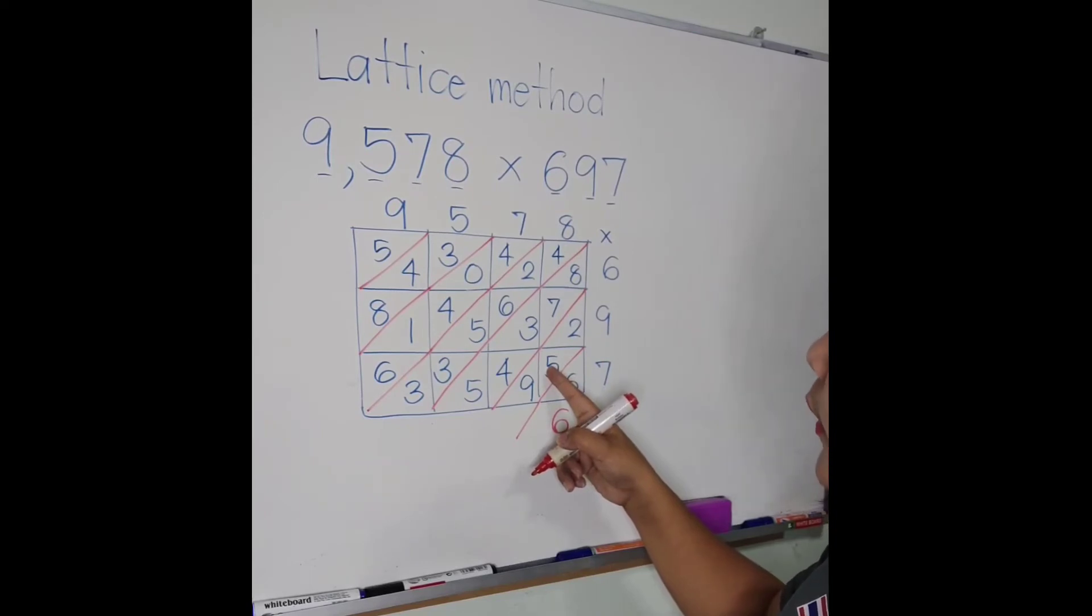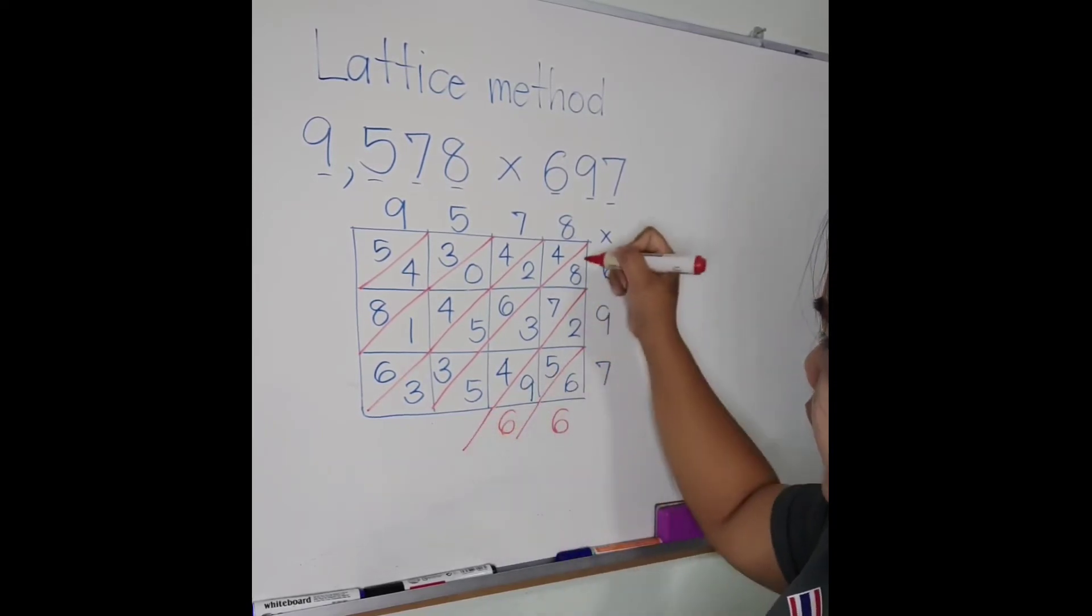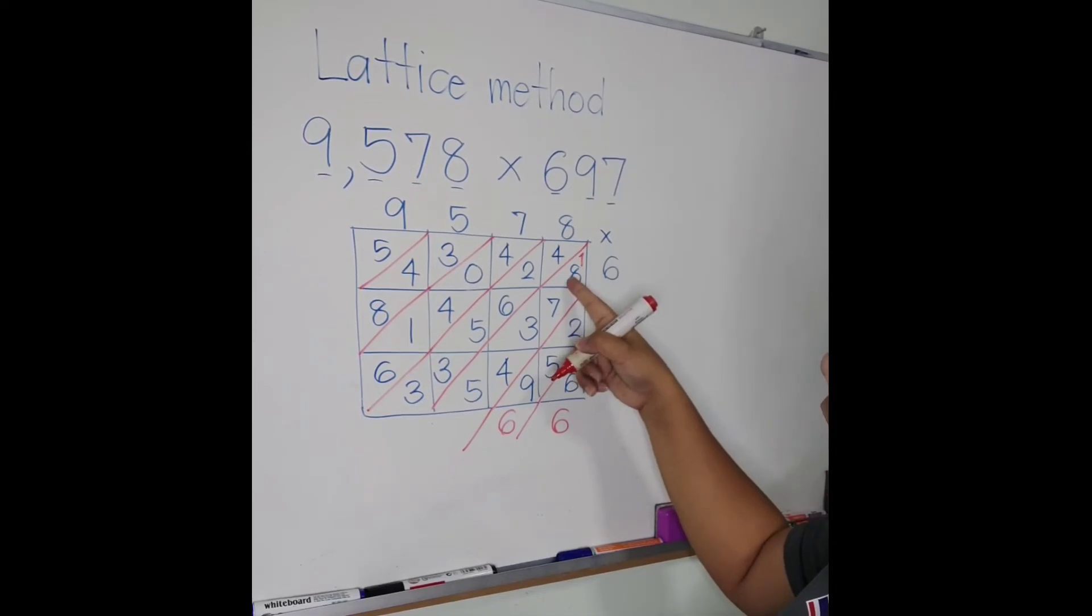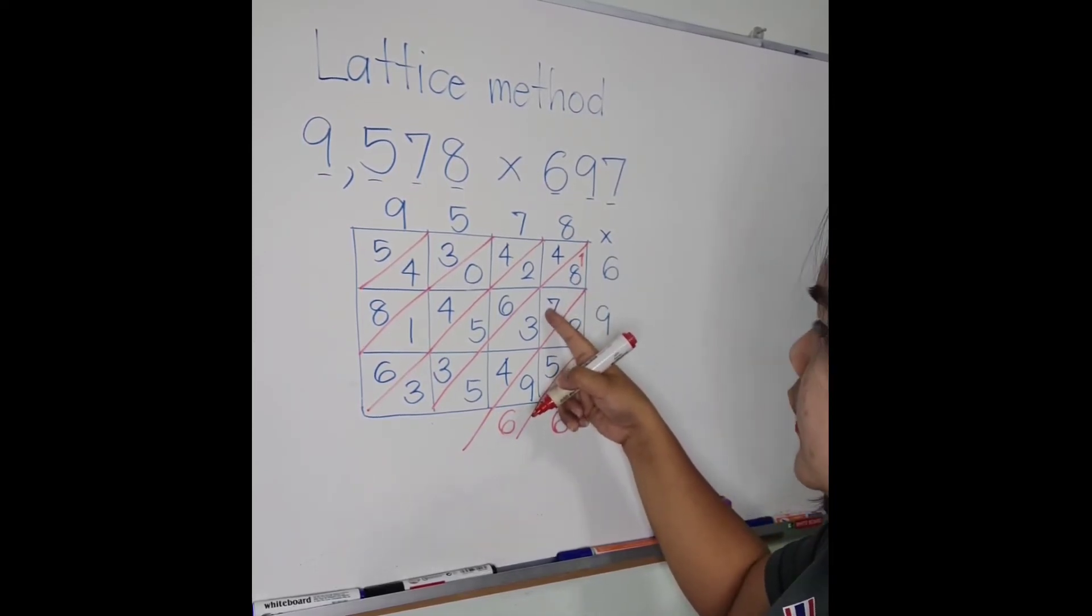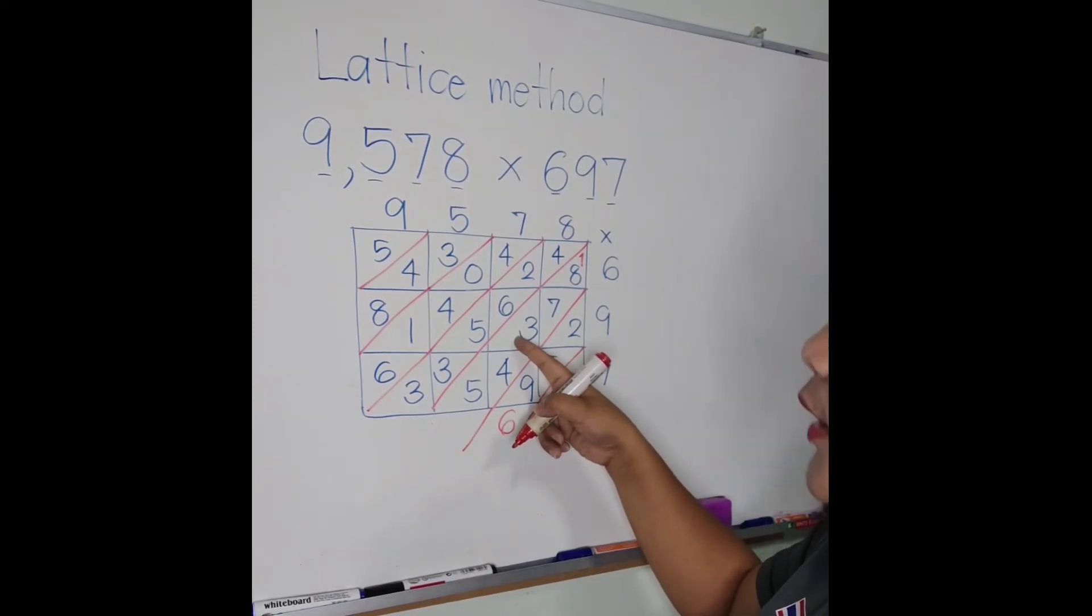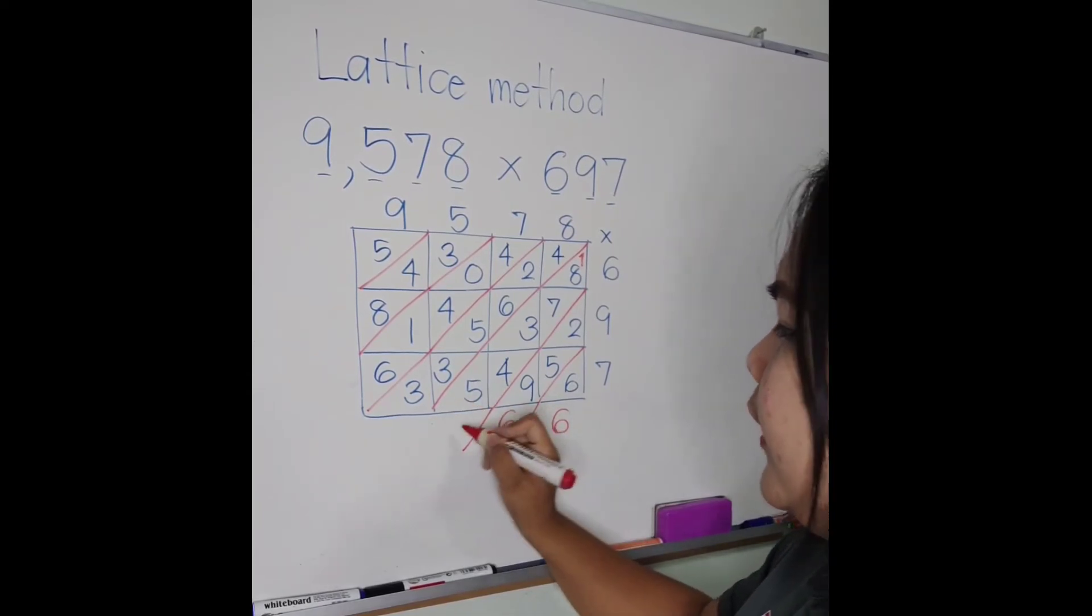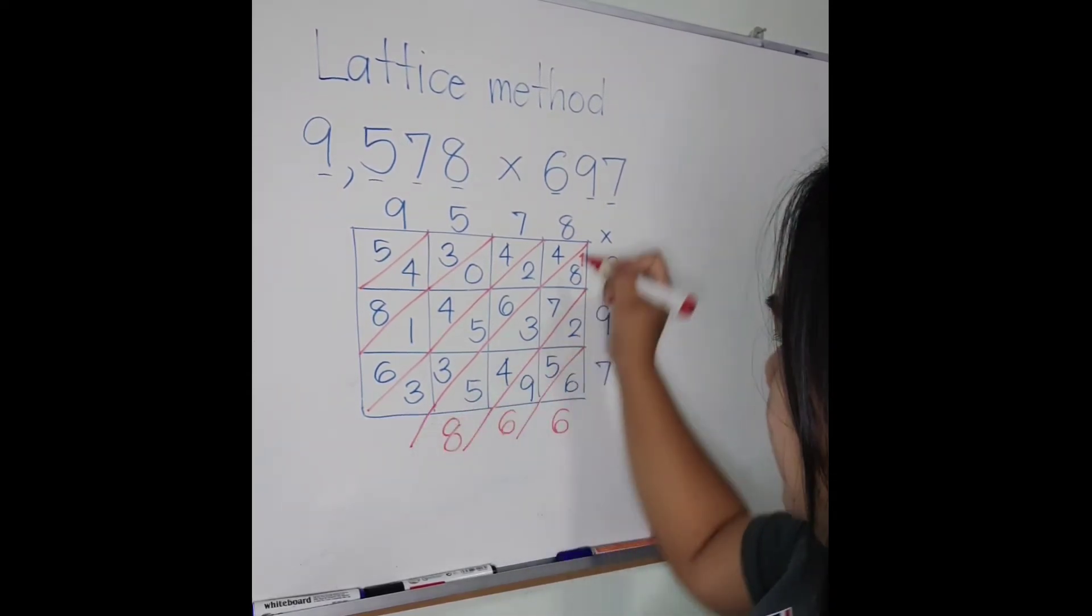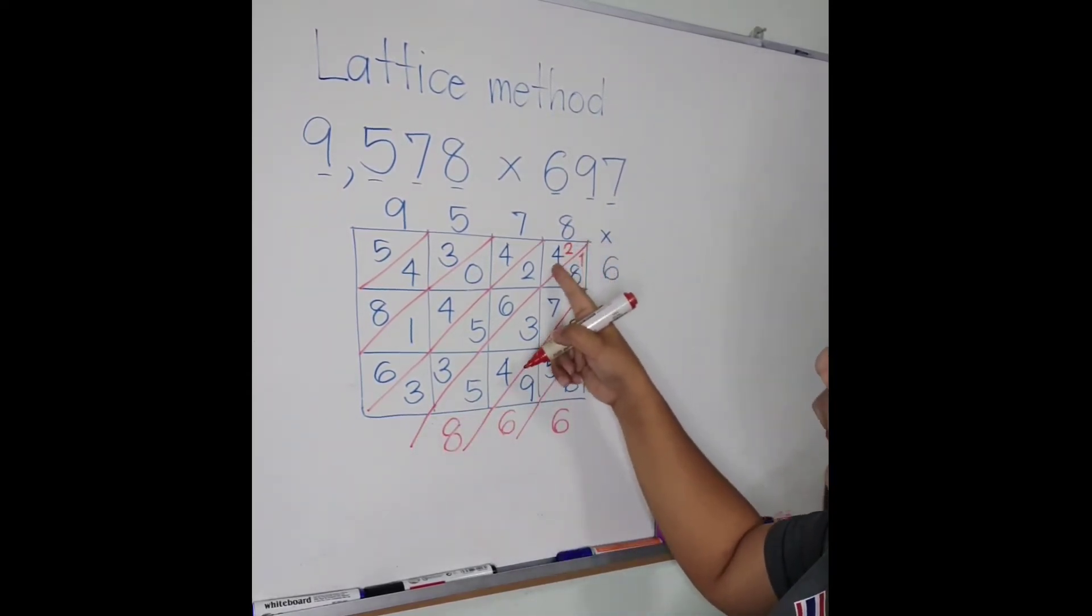1 plus 8 is 9, 9 plus 7 is 16, plus 3 is 19, plus 4 is 23, plus 5 is 28, carry 2. 2 plus 4 is 6.